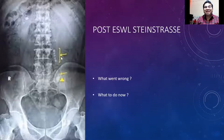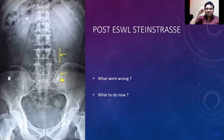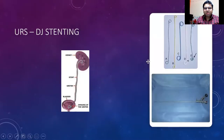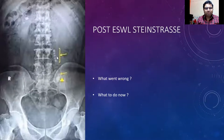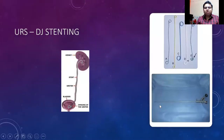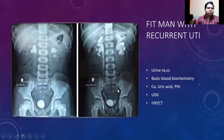What went wrong: she had a stone larger than one centimeter, and we failed to stent the ureter beforehand. If you had placed a double-J stent prior to shock wave lithotripsy, the stent would have kept the ureter patent and supple, allowing stone fragments to pass easily. Instead, the fragments caused obstruction forming a Steinstrasse. Now you must admit her and perform ureteroscopy, break the stones with laser lithotripsy, and place a double-J stent.